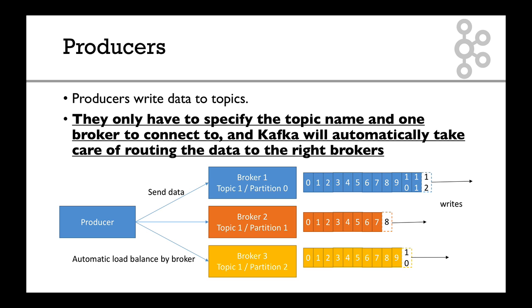Producers write data to a topic and they only have to specify the topic name and one broker to connect to, as said before, and Kafka will automatically take care of routing the data to the right brokers and the right partitions.